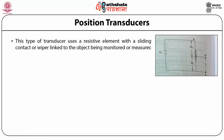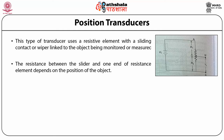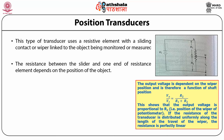The resistance between the slider and one end of the resistance element depends upon the position of the object. We can reduce the above schematic of the position transducer into an equivalent circuit. The output voltage is dependent on the wiper position and is therefore a function of shaft position: V0 / Vt = R2 / (R1 + R2). This shows that the output voltage is proportional to R2 — that is, the position of the wiper of the potentiometer — and if the resistance is distributed uniformly along the length of travel of the wiper, the resistance is perfectly linear.